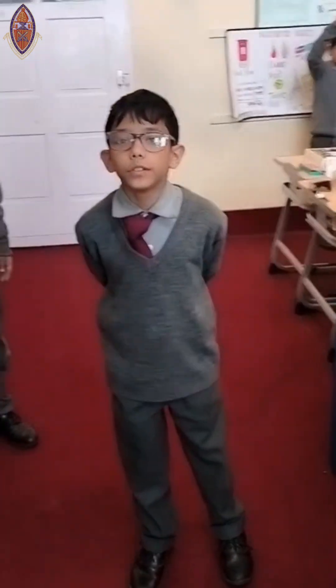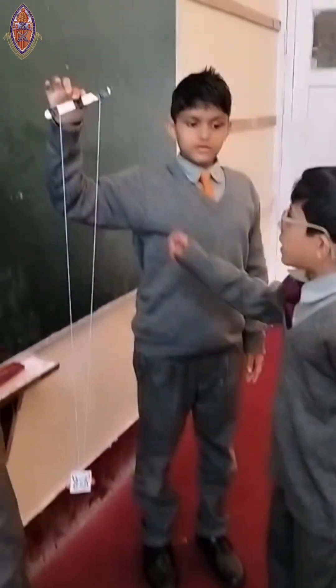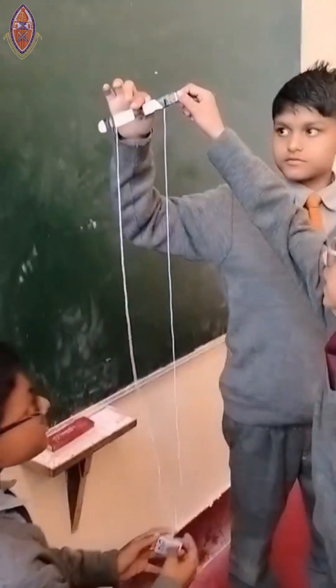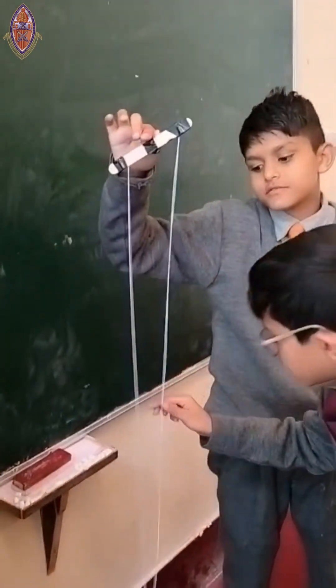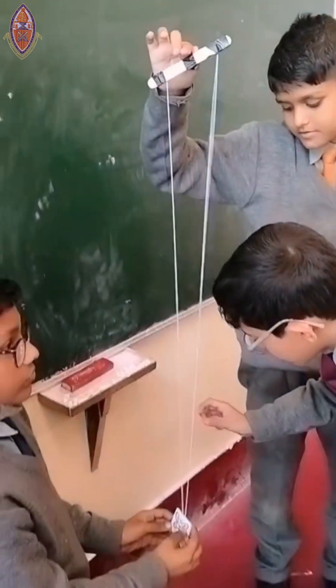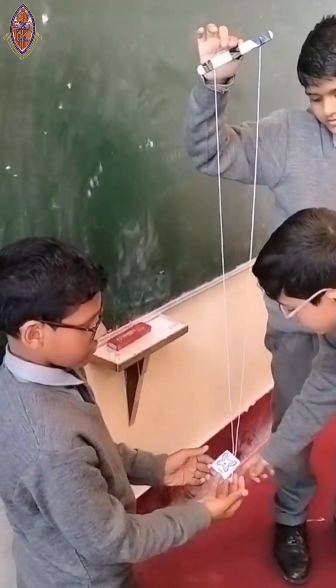Today we are going to do a think tank activity to show you the concept of friction. We have an ice cream stick, some cello tape, a string, a butterfly and two beads.